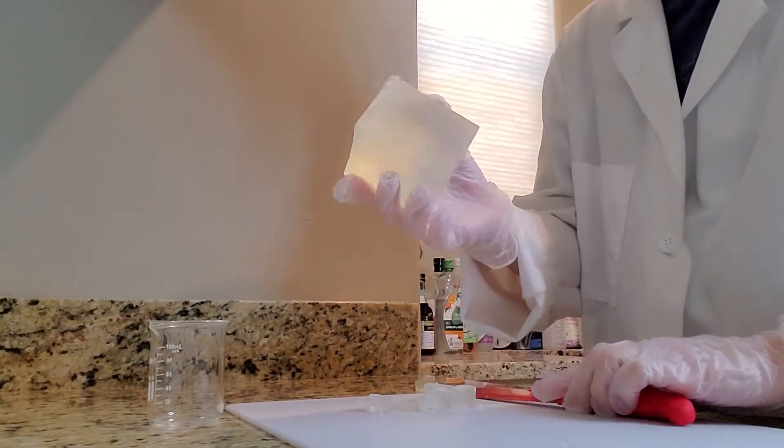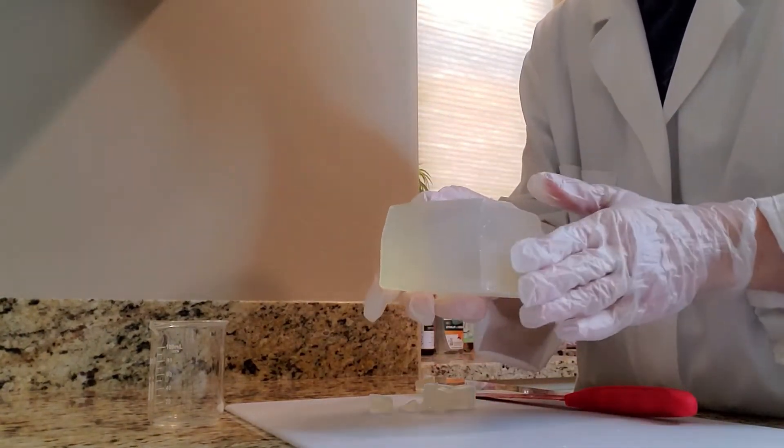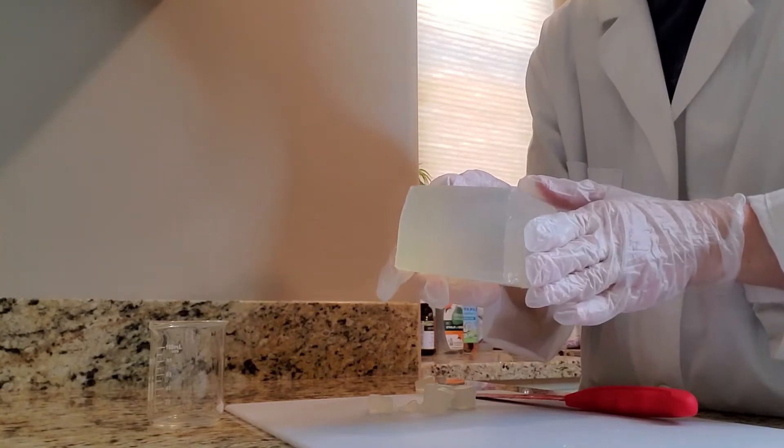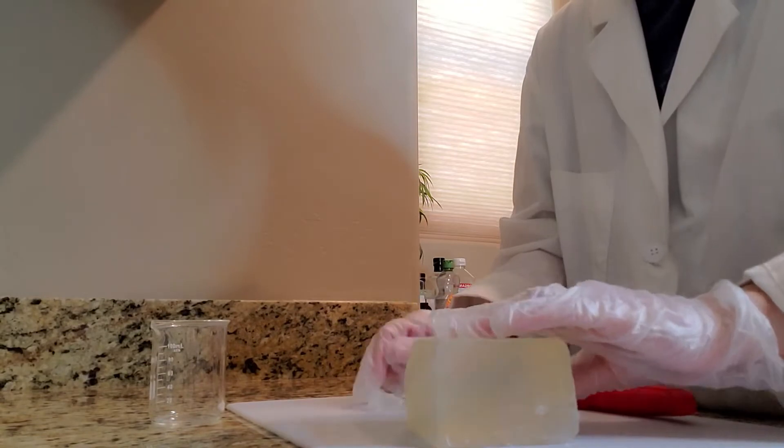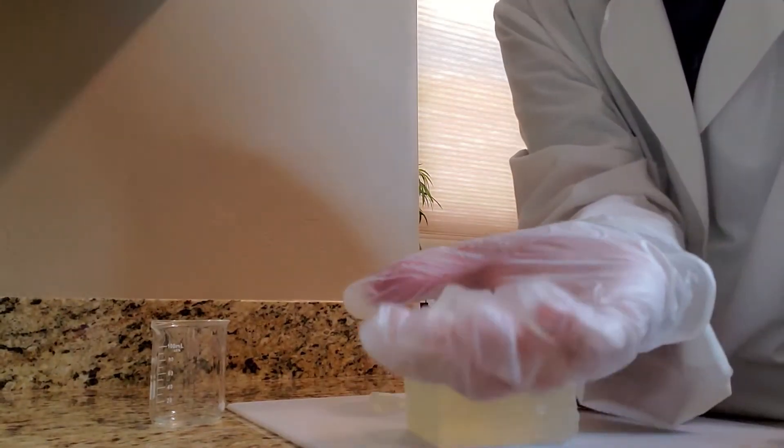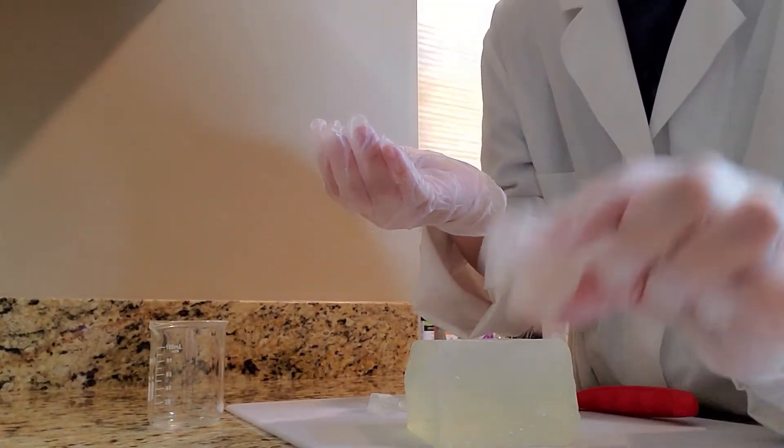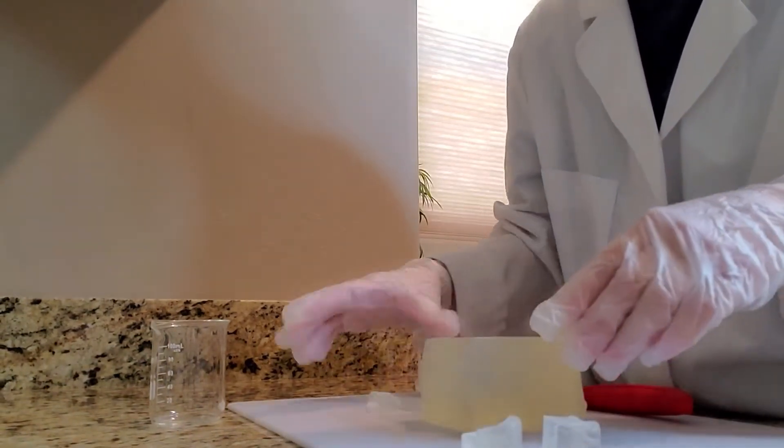You're going to start out with a clear base of just melt and pour soap. And you're going to want to cut it into small little chunks, squares, whatever you want to call it, just so that they melt easy.